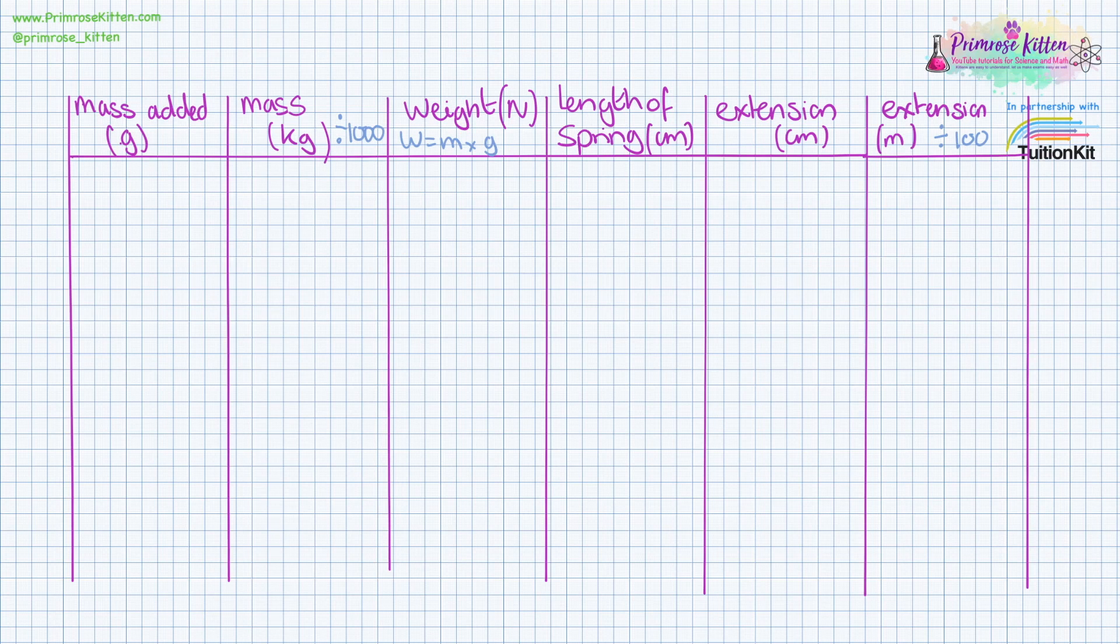Your table for this experiment might look a bit complicated because what we measure isn't actually what we plot on a graph. You're going to be measuring the mass that you add in grams and you're going to be measuring the length of the spring in centimeters. But what we actually plot on the graph is weight in newtons versus extension in meters.